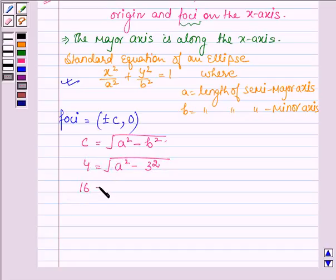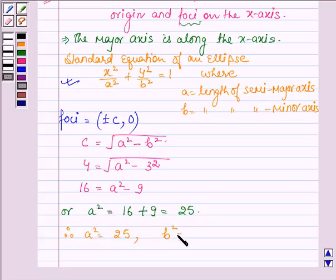Squaring both sides we have 16 is equal to a-square minus 9, or a-square is equal to 16 plus 9 which is equal to 25. And b is given to us as 3, so we have 3-square is equal to 9.